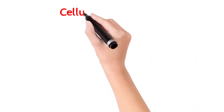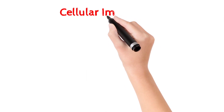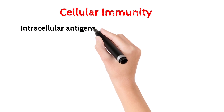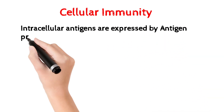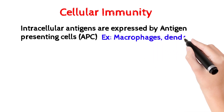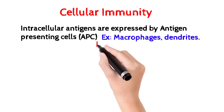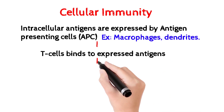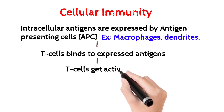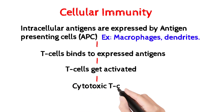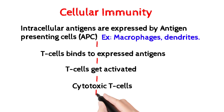Cellular immunity targets intracellular antigens. Intracellular antigens are expressed by antigen presenting cells. If they are expressed by cells, antigen presenting cells like macrophages and dendritic cells present these intracellular antigens to T-lymphocytes. The T-lymphocytes then get converted into cytotoxic T-cells. These cytotoxic T-cells carry out apoptosis on the infected cell.